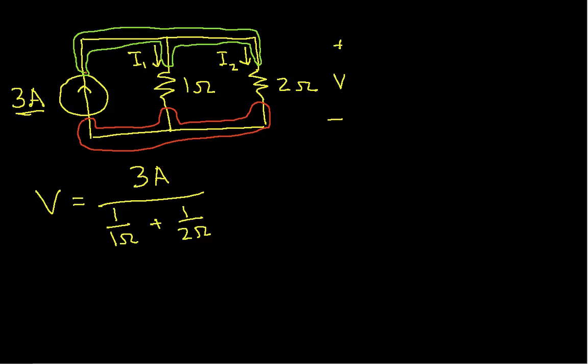Now, we also can write the currents that we're interested in, in terms of V. I1 is the voltage across the resistor V, which we've just solved for, over 1 ohm. I2 is V divided by 2 ohms. And we can use the fact that we've solved for V to figure out what I1 or I2 is.